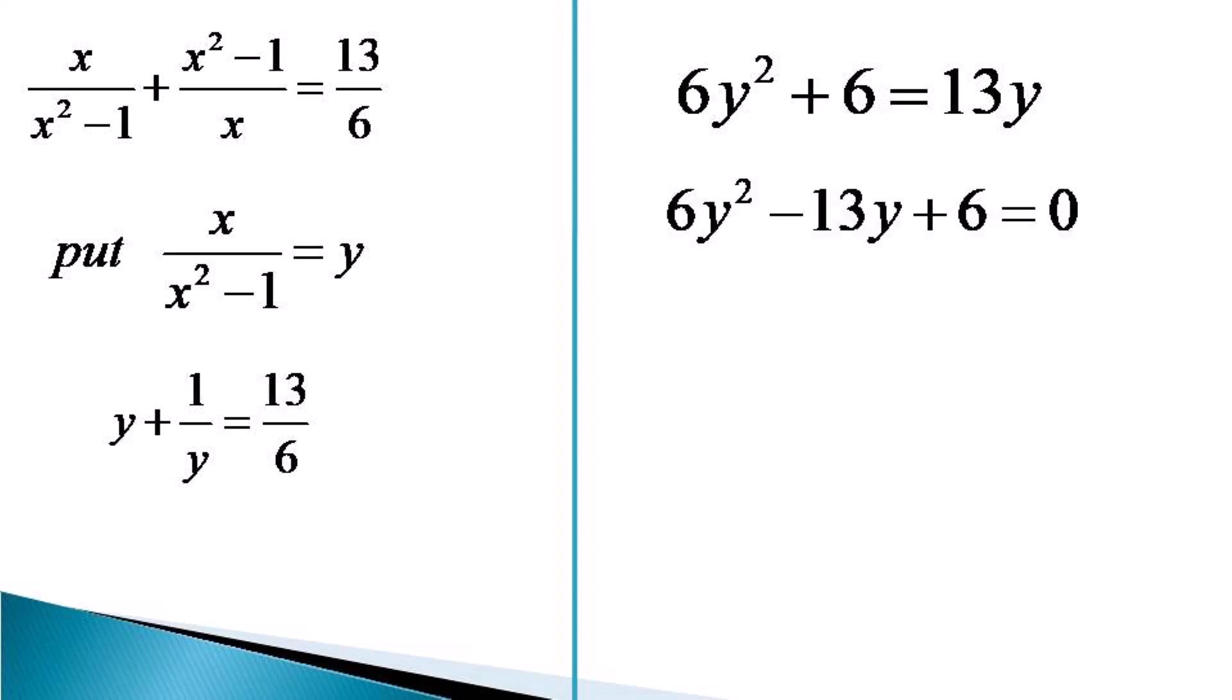Adjusting the terms, the equation becomes 6y² - 13y + 6 = 0, which can be factorized as (3y - 2)(2y - 3) = 0.